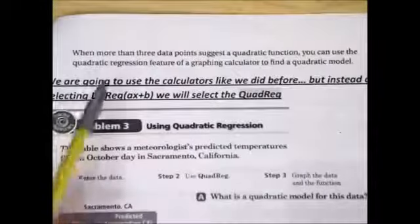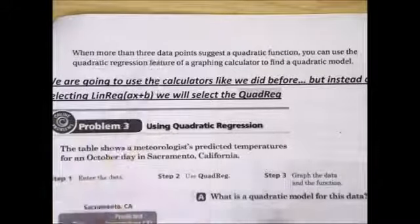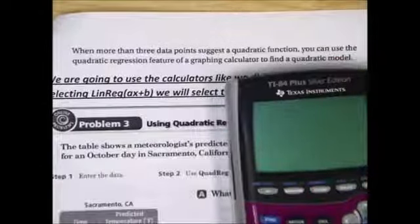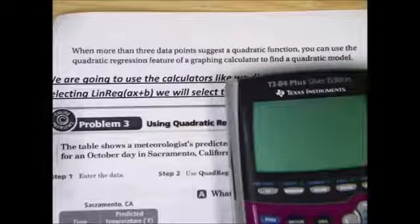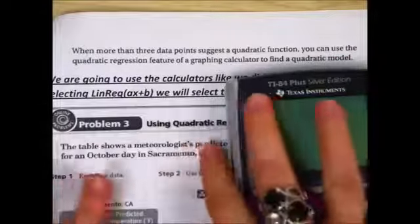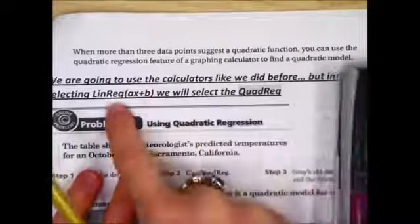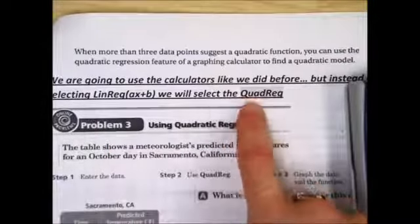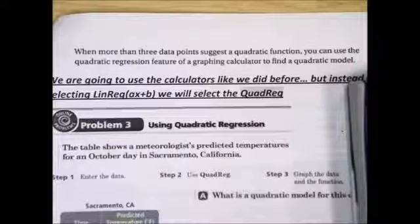Moving on to problem 3, when you have three or more data points, you are going to use a calculator to figure out what the equation will be. We're going to do this just like we did in chapter 3 with linear regression, but this time we're going to do quadratic regression because we're dealing with quadratics with parabolas. This table shows a meteorologist's predicted temperatures for an October day in Sacramento, California.